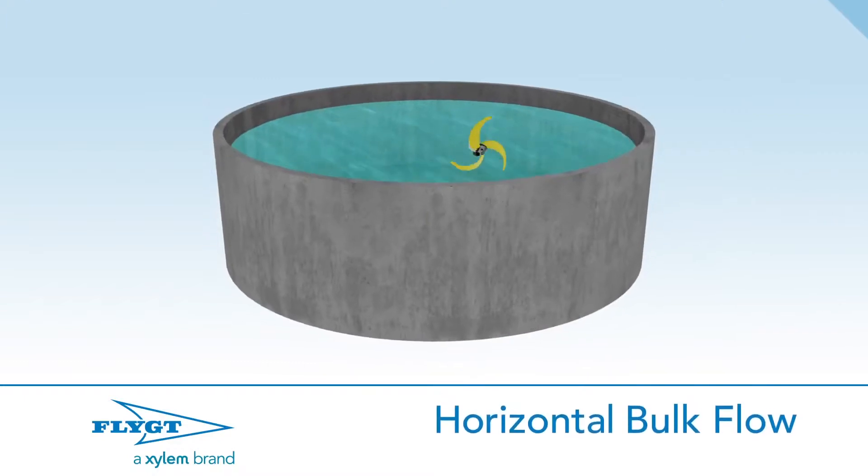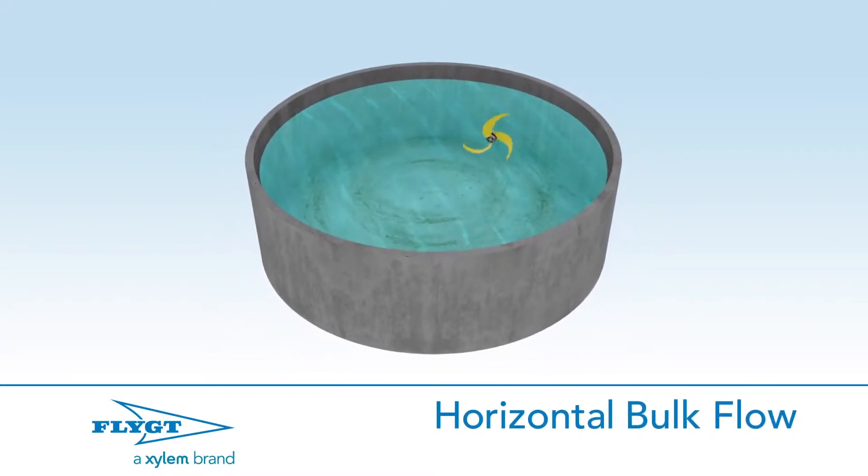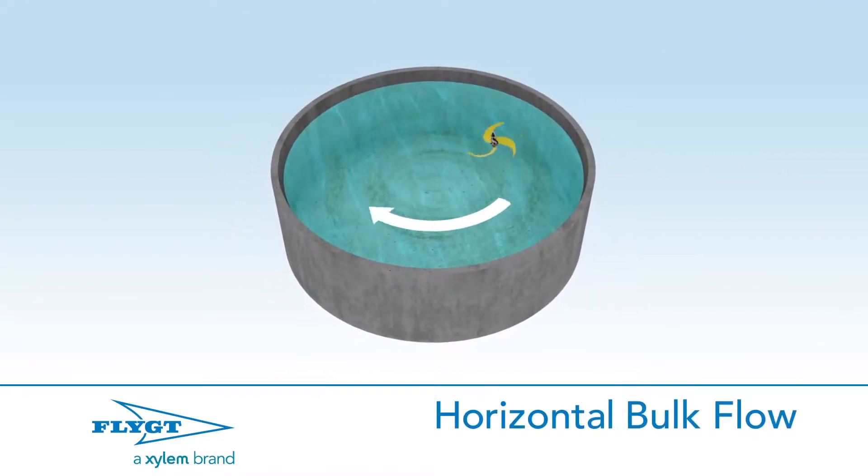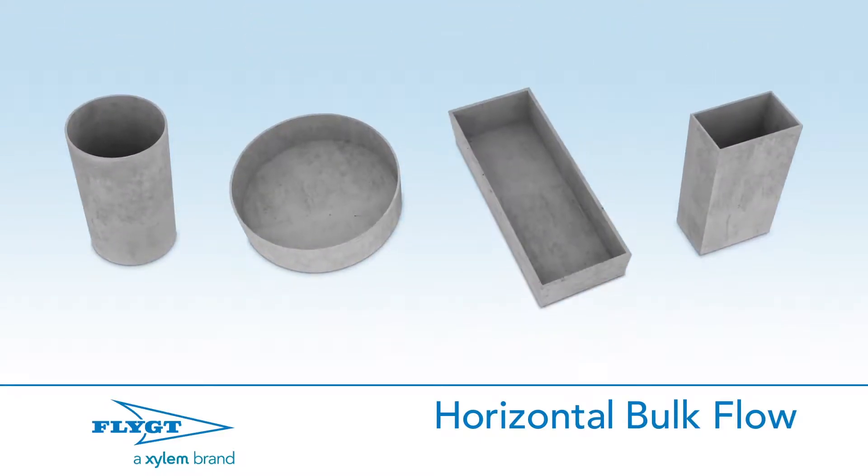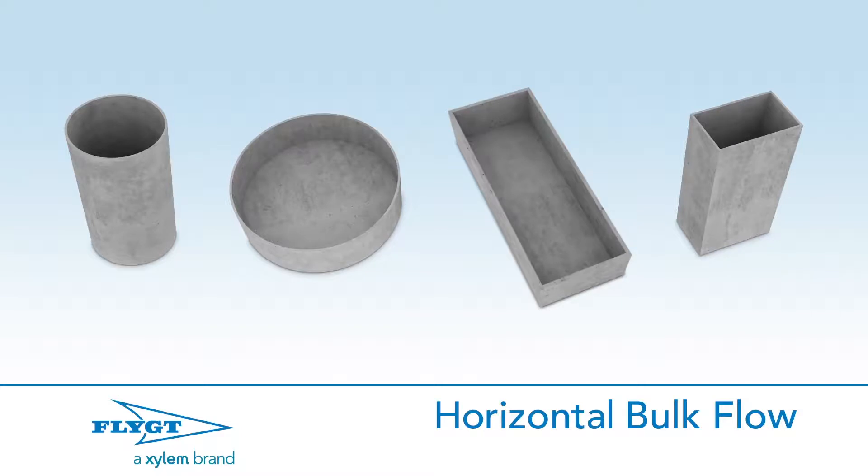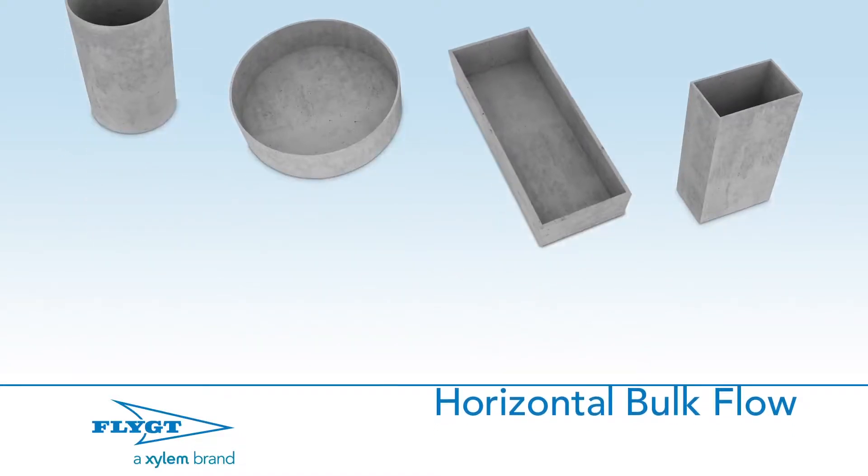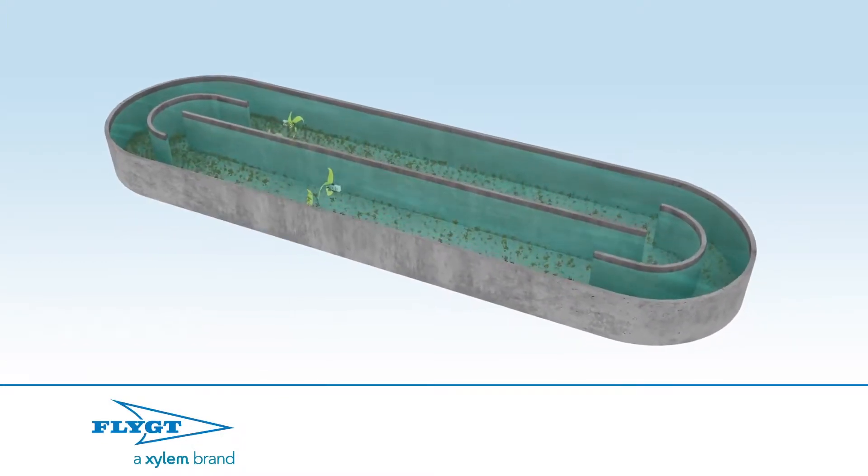Round tanks that are wider than they are tall are most efficiently mixed with bulk flow in their horizontal plane. Every tank shape has an optimal bulk flow pattern. The designer's challenge is to determine how to create that bulk flow reliably using the least amount of equipment and energy. Bulk flow is also important in special applications,